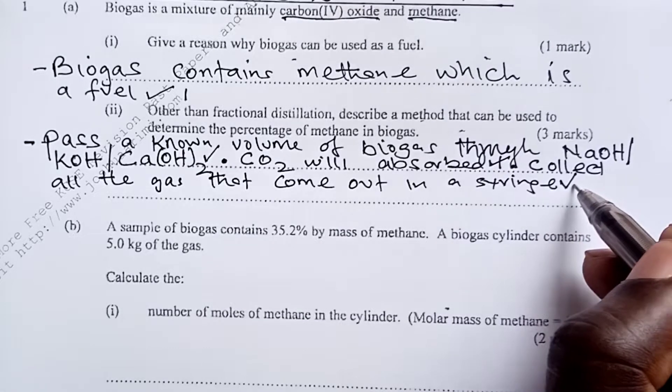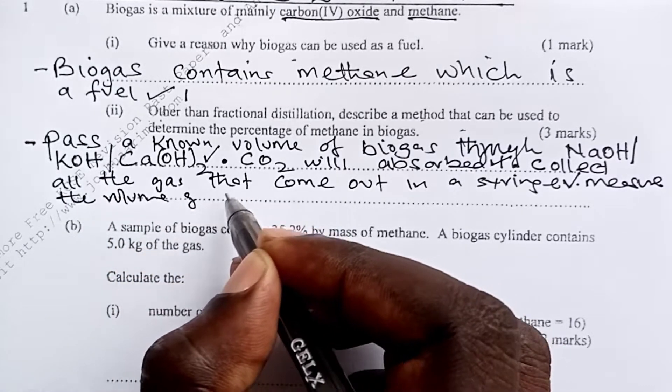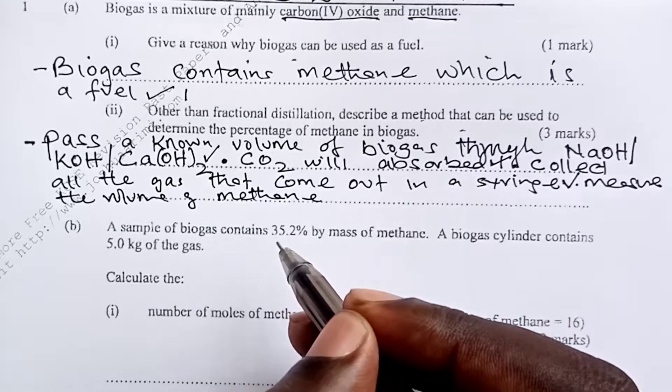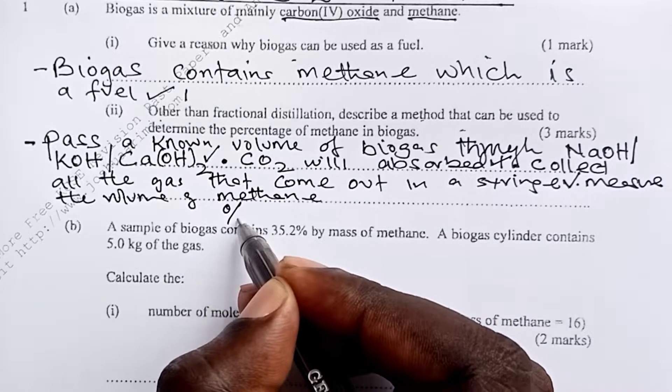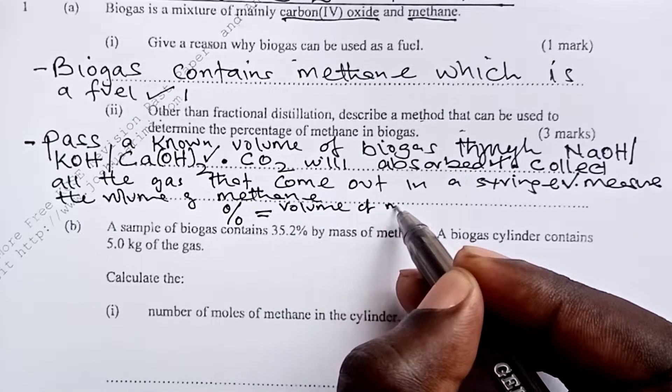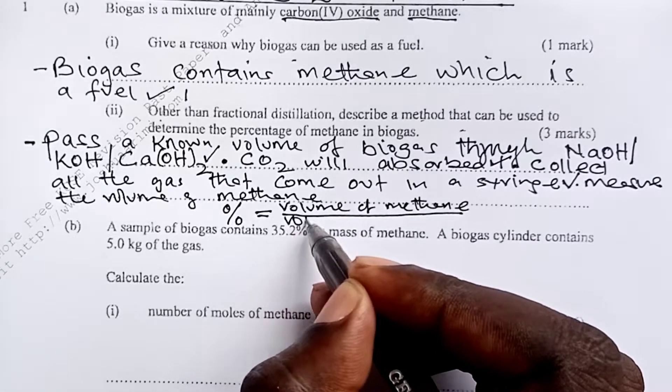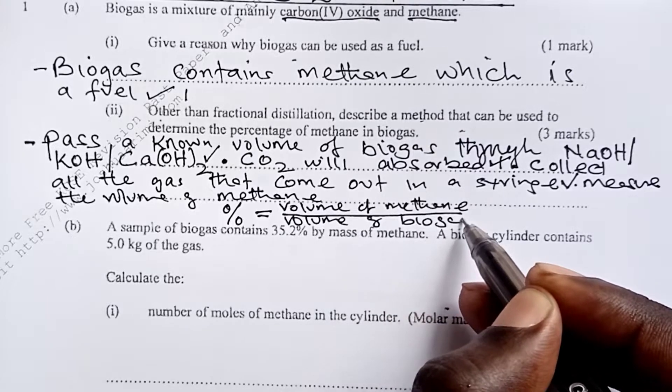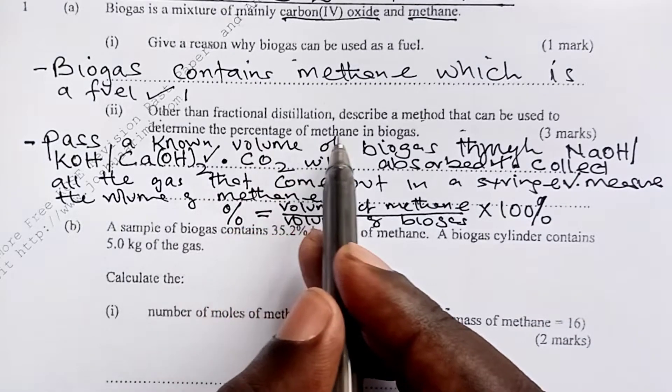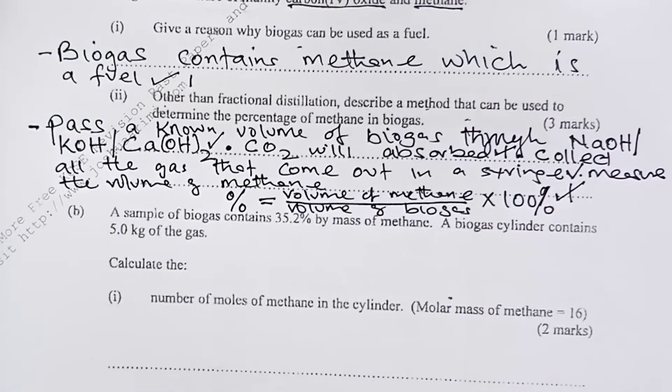Then lastly we say we are supposed to measure, using that syringe, measure the volume of methane that will have come out after all the carbon-4 oxide has been absorbed. Then, once we have those two volumes, the percentage composition can then be determined by volume of methane you will have read from the syringe. You will divide by the volume of biogas that we passed through the alkali, and then this you multiply by 100% to get the percentage of methane in biogas. This would give the last half mark, total marks 3.